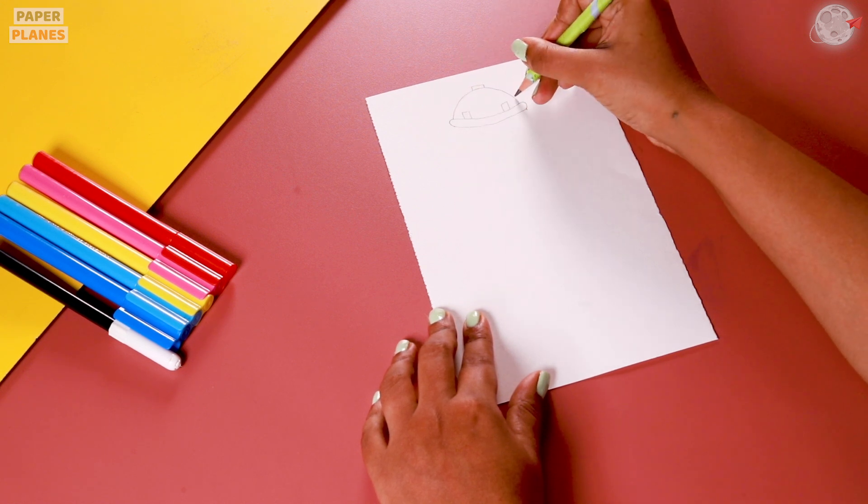Once we are done with that, let's start with the pants. We will make a dot right here and then make a curved line. Why don't we repeat the same thing on the other side?